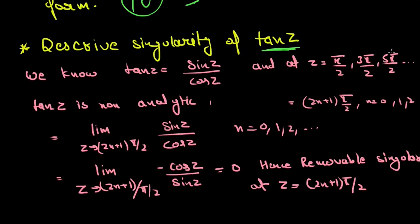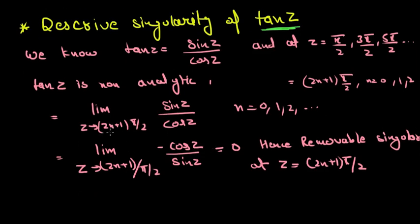Now we have to check what type of singularity this is. We will take the limit as z approaches (2n+1)π/2 of sin z upon cos z. We can't solve this directly, so we will use L'Hôpital's rule.